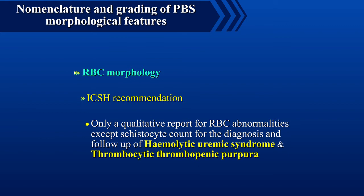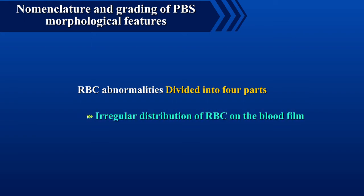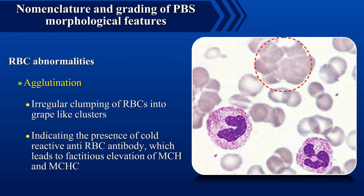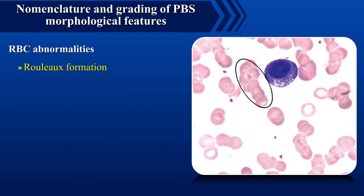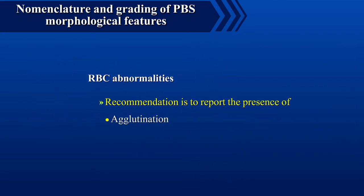A cystocyte count may be of clinical value for the diagnosis and follow-up of hemolytic uremic syndrome and thrombotic thrombocytopenic purpura. RBC abnormalities can be divided into four parts. The first is irregular distribution of red blood cells on the blood film. Agglutination is the irregular clumping of red blood cells into grape-like clusters, usually indicating the presence of cold reactive anti-red blood cell antibody, which might lead to fictitious elevation of MCH and MCHC. Rouleaux formation is the stacking up like a pile of coins of red blood cells, usually occurring when plasma protein concentrations are high. The recommendation is to report the presence of agglutination and rouleaux formation when observed.